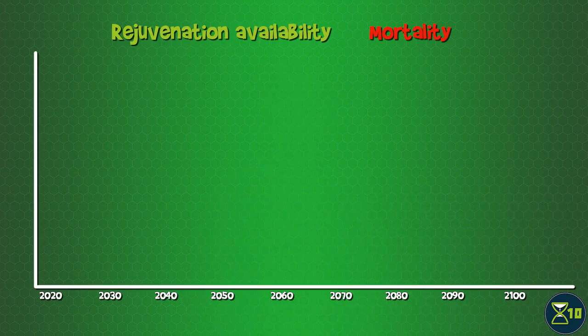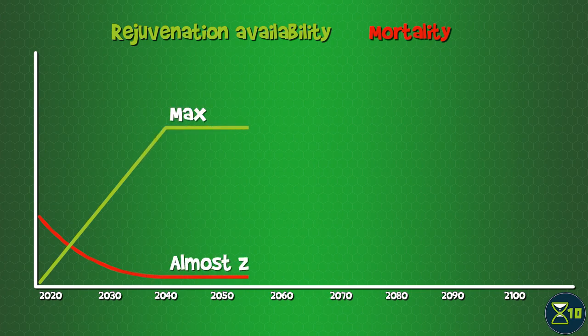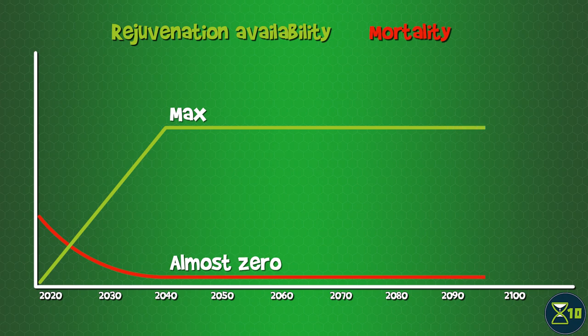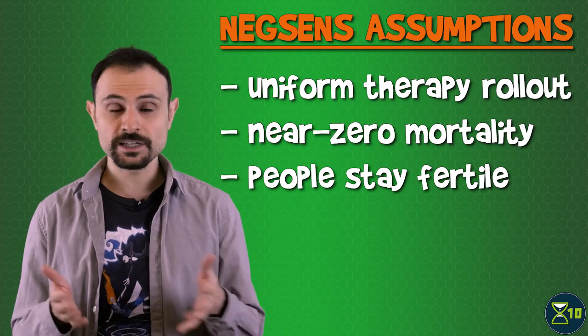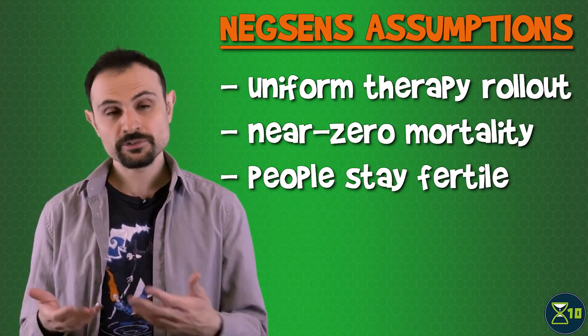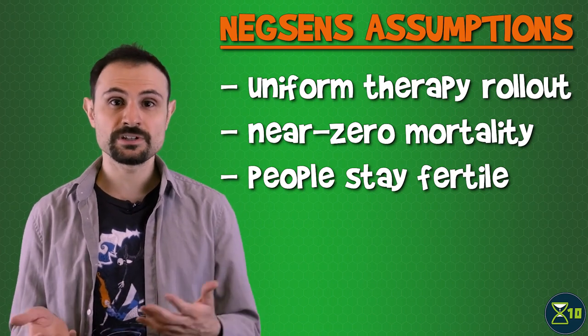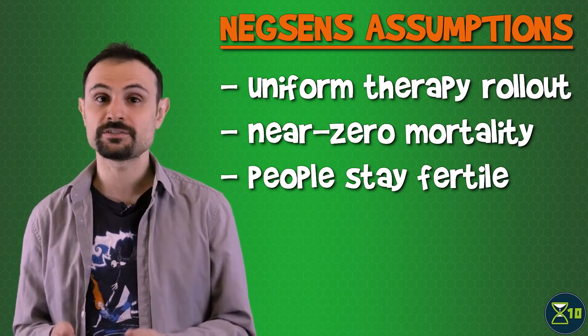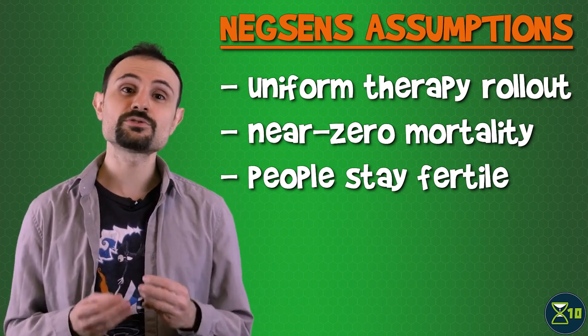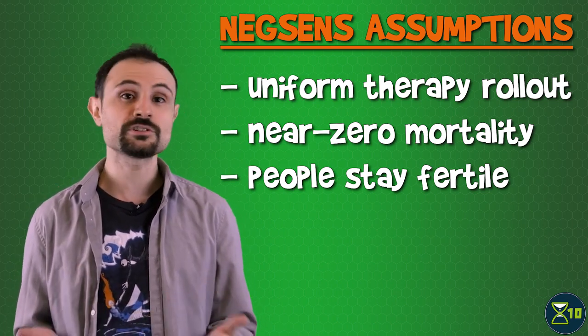The negligible senescence scenarios, or negsense, all assume that rejuvenation therapies were already available in 2020 and would be phased in uniformly across the world over the course of 20 years. During this time, the researchers assumed that mortality by nearly all causes, including the chronic diseases of aging, would be driven down almost to zero. The only exception was mortality due to mental illness. The researchers assumed that mental illness would slowly accumulate with the passing of time, although they did place a limit on that. They also assumed that deaths due to accidents and injuries too would go down significantly. Their reasoning was that a society that managed to drive down age-related death would successfully try to do the same to other kinds of death too. Another crucial assumption was that rejuvenation treatments would also preserve people's ability to have children at any age.